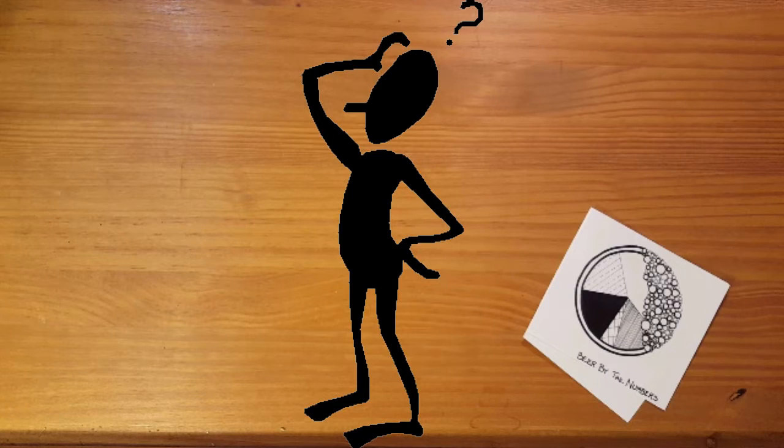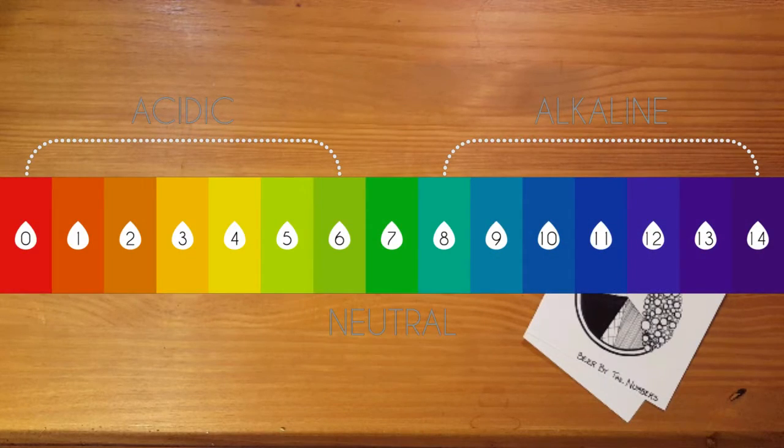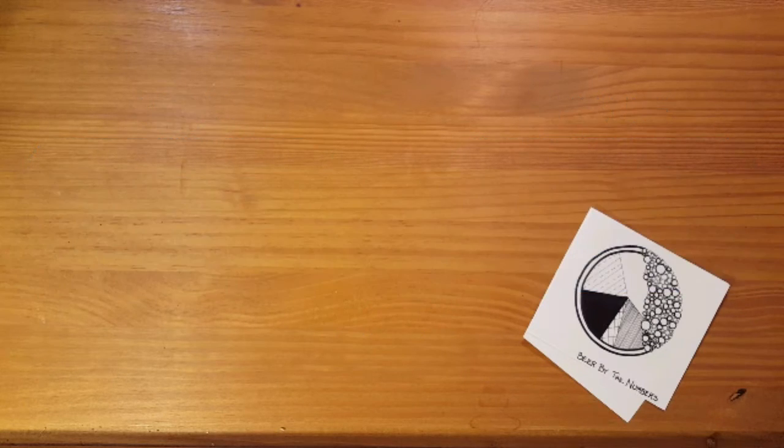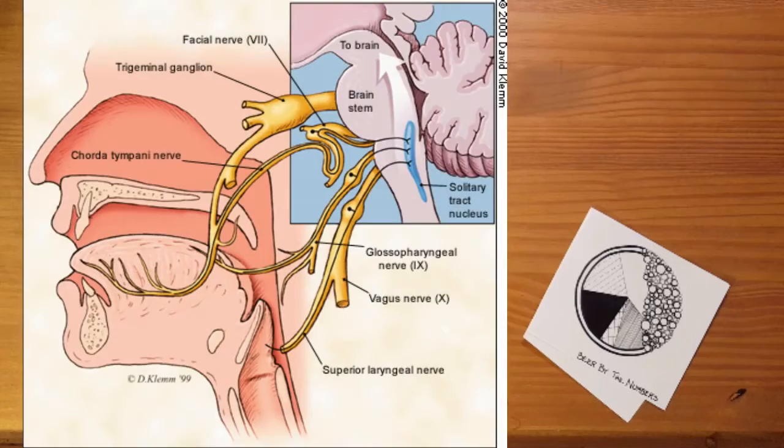So why care about titratable acidity anyway? Well, pH quantifies the number of hydrogen ions in a liquid, but your palate doesn't really measure pH directly. Your palate and brain have to interpret the multi-variable solution that is beer.